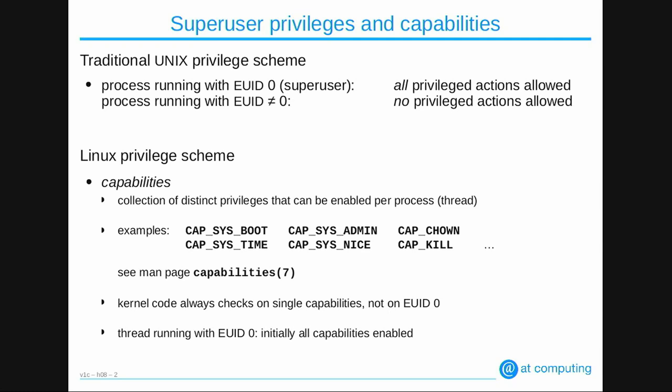What we see in the kernel code of Linux is that it always checks on capabilities. It never checks whether a thread runs with user ID 0 — there's always a check: do you have this capability bit set? Then you are allowed to do this special action. Still, if a process is running with UID 0, all the capabilities are set by default, to maintain compatibility with the old Unix privilege scheme.